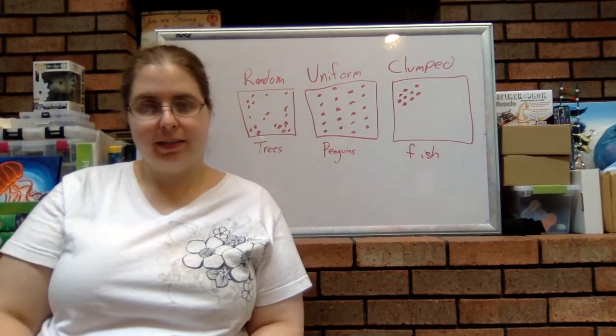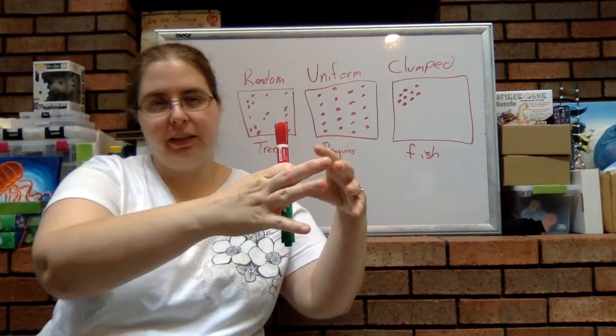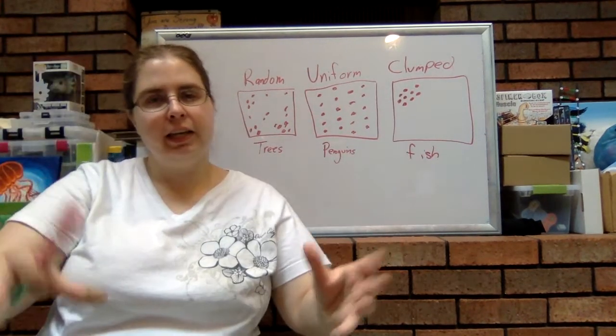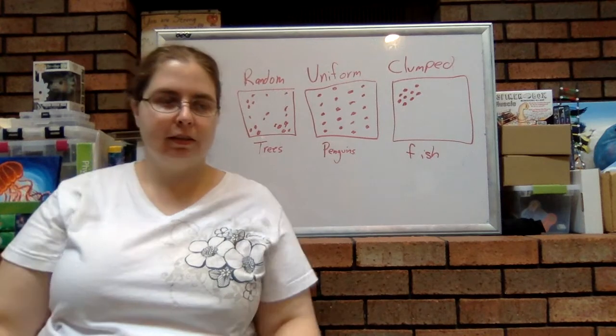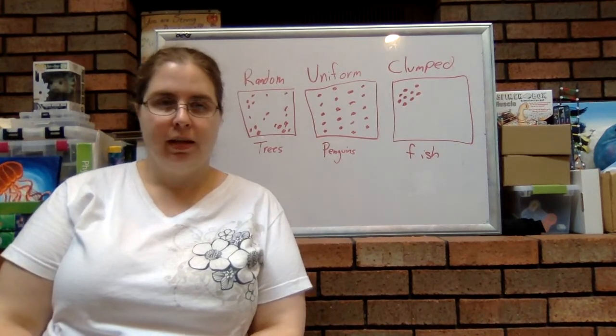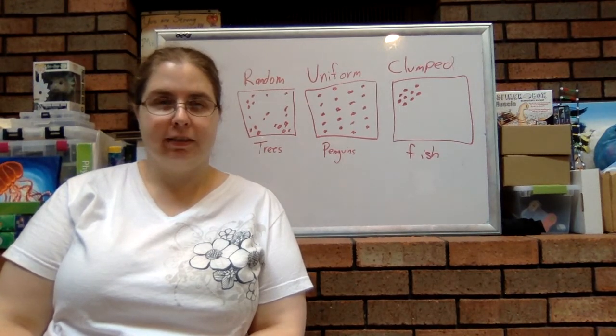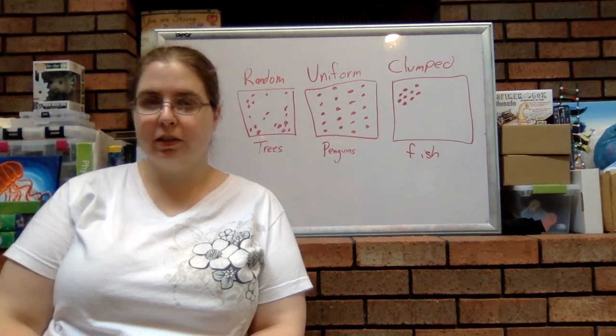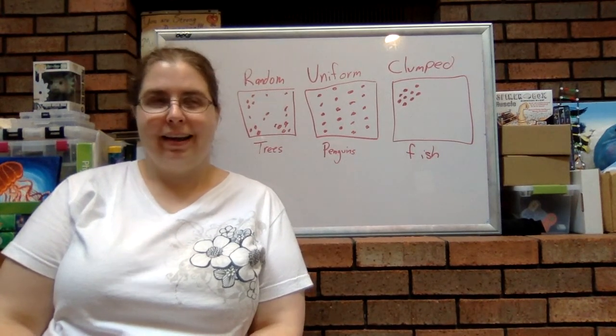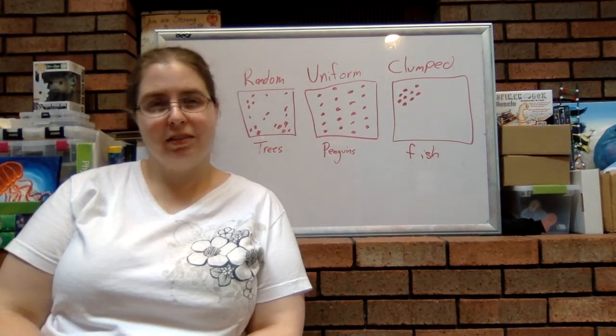Instead, you might see like a clump here and then maybe just a few sparse ones here and then a clearing and then another clump because the trees, their seeds are going to grow wherever they are able to. And the soil is going to be pretty consistent in that entire ecosystem. So as long as they have access to enough water and sunlight, they're going to be successful.